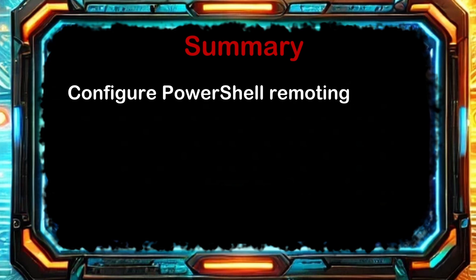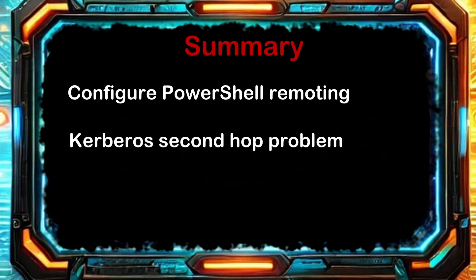That wraps up this lesson on PowerShell remoting. We first went over what PowerShell remoting is and how to set up and configure it — remember that it has to be set up on the remote machine, not the administrator's computer. We then looked at the Kerberos second hop problem and methods to work around it, including using CredSSP, Kerberos delegation, Just Enough Administration, using the Run As Credential parameter, or passing credentials inside an Invoke-Command script block.